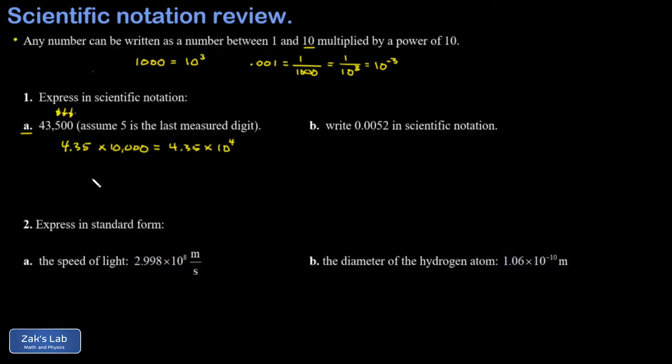So when we're told that 5 is the last measured digit, we're being told that we have three significant digits here and the scientific notation should have three digits in it. If we were told that the tens place was the last measured place value, we could simply write scientific notation as 4.350 times 10 to the fourth.